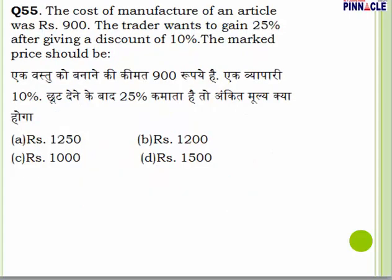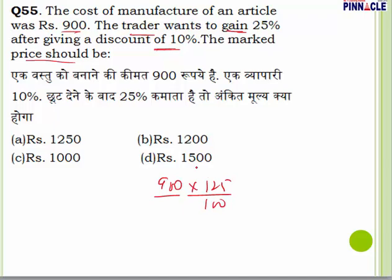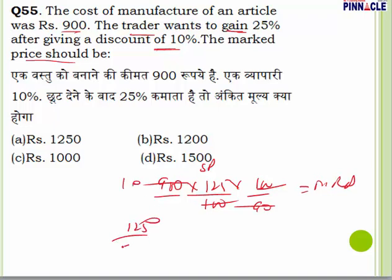Question number 55: the cost of manufacture of an article is 900. The trader wants to gain 25% after giving a discount of 10%. CP = 900, profit = 25%, so SP = 900×125/100 = 1125. Since SP = MRP×90/100, MRP = 1125×100/90 = 1250. Answer is A.